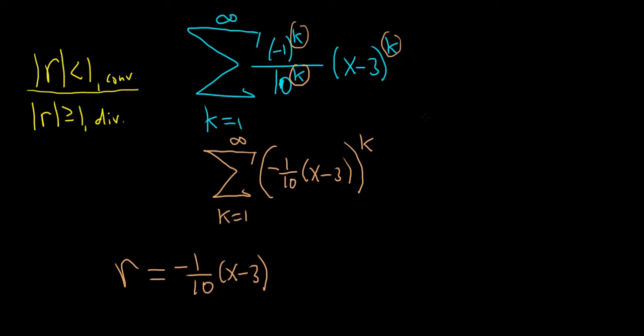So let's go ahead and find those values of x for which the series converges. So we'll take r, so negative 1 tenth, parentheses x minus 3, and we'll put it in absolute value, and we'll set that less than 1. So you can just take the absolute value of each piece. The absolute value of negative 1 tenth is 1 tenth, and then we still have the absolute value of x minus 3, and that's all less than 1.